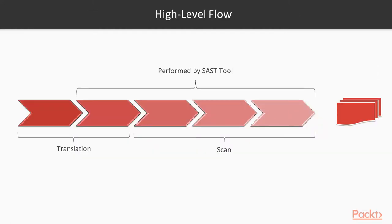This slide shows a high-level flow of static testing. The first phase is compilation, which comprises syntactic and semantic checking, and looks for best practices of writing more robust code. In model extraction, internal models such as abstract trees are prepared from the various properties and constituents of source code. These are further examined to check for vulnerabilities.